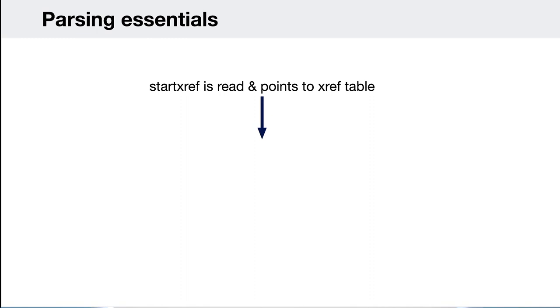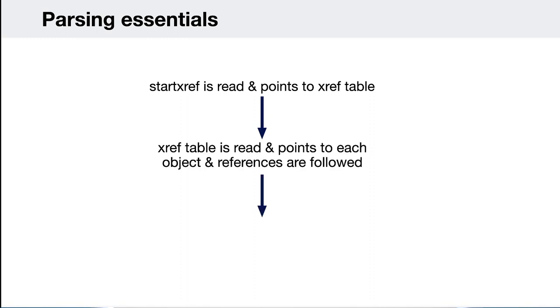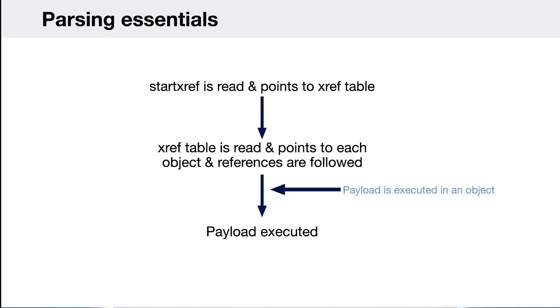I want to give you a high-level view of how the PDF is parsed, just so you can understand where our injections occur. The startxref is read and points to the xref table. The xref table then lists all the objects, so the PDF client will look through all of the xref table to gather all the objects. If you're going to do an injection, it's probably going to occur within an object itself, so our payload will be executed within an object when the object is executed and the document is rendered.